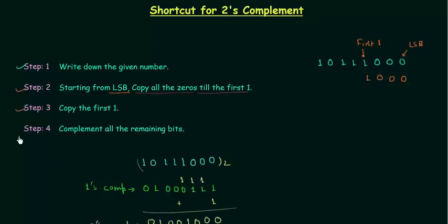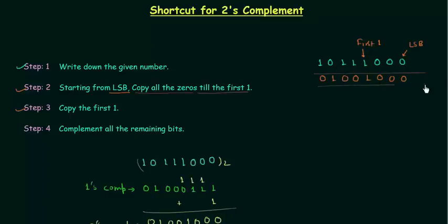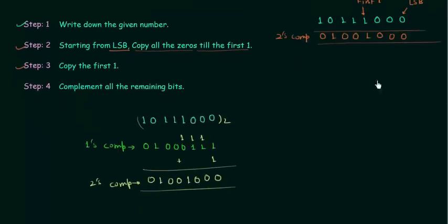In step number 4 we have to complement all the remaining bits. The remaining bits are 1 0 1 1 and we have to complement them. Complement of 1 is 0, complement of 0 is 1. The obtained result is the 2's complement. You can see we got the same answer.